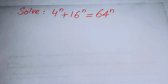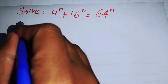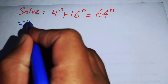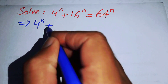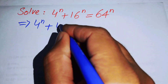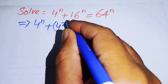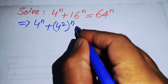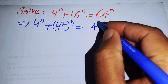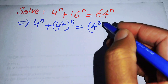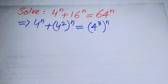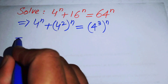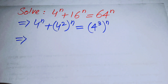The very first thing we are going to do is rewrite this equation. We have 4 to the power of n, plus 16 written as 4 squared, all to the power of n, and this equals 4 cubed all to the power of n, because we write 64 as 4 cubed.